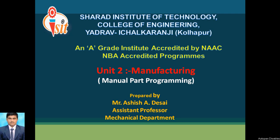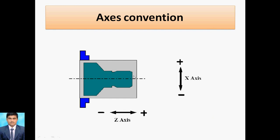First of all we will discuss the axis convention. While considering the turning cycle, we hold the workpiece into the Chuck. The positive X-axis is at the upper side and negative is on the lower side. For Z, when the tool moves from the workpiece reference point (workpiece zero point) to another point, we take the negative direction.